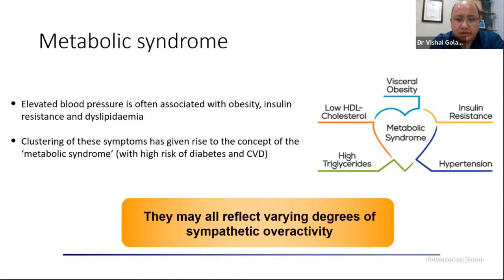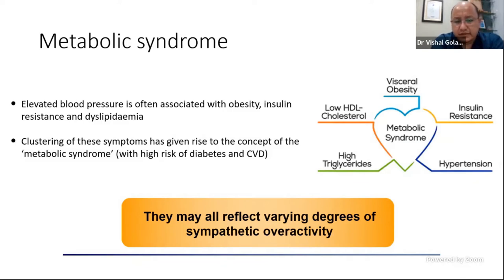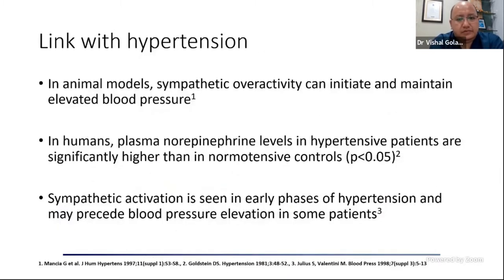One important mechanism of blood pressure elevation is sympathetic overactivity, alongside the salt and water hypothesis of hypertension. In people with metabolic syndrome factors — obesity, high triglycerides, visceral obesity, dyslipidemia — sympathetic overactivity is typically one of the driving forces for hypertension. Focusing only on the salt pathway might not control blood pressure in this group. This is where control of sympathetic overactivity becomes relevant and where moxonidine, the drug under discussion today, comes into play.